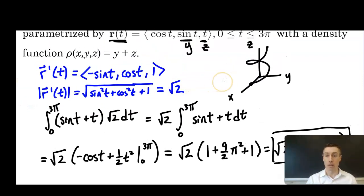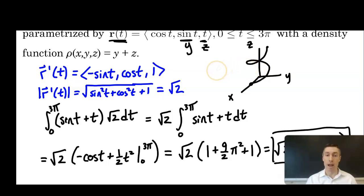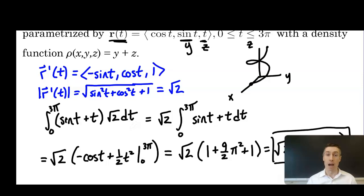The center of mass would lie on the z-axis since the helix is symmetric around it, so x̄ = 0 and ȳ = 0. Finding z̄ would require integration by parts because you'd integrate z times the density function, giving terms like t·sin(t) + t². That's the concept of a line integral of a scalar function. In the next video, we'll bring in vector fields and look at how we take line integrals of vector fields.